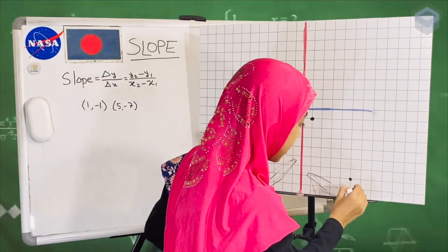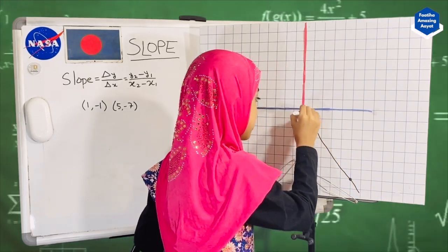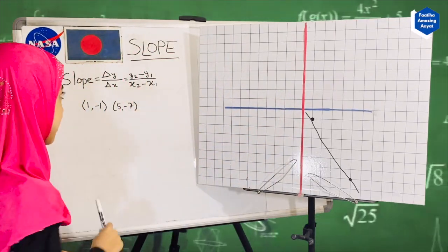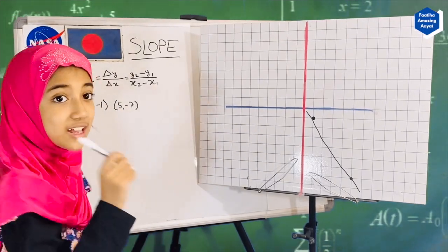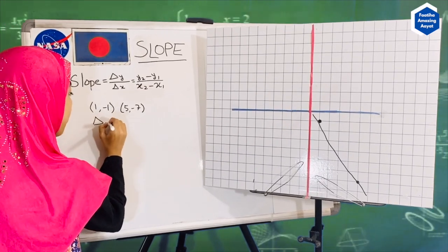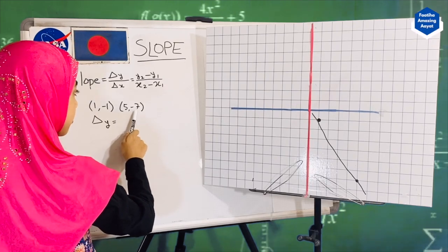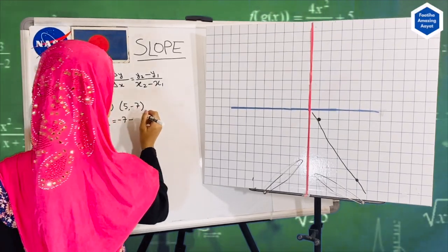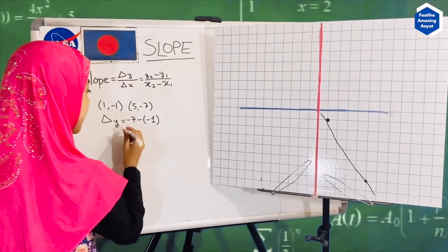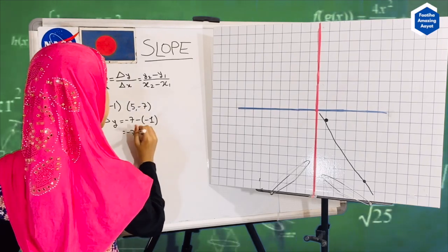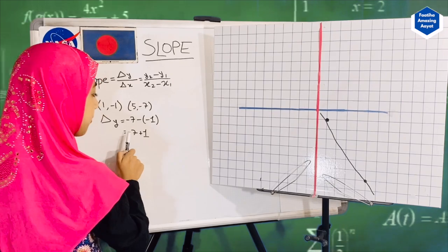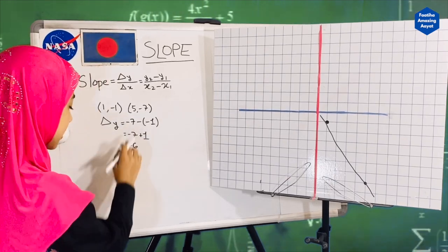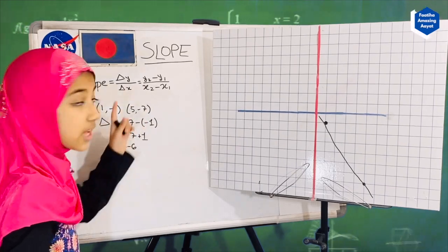Now that I have found my two points, I'll connect them so you can see the slope between them. To calculate it in math: delta y equals y2 minus y1. So delta y equals minus seven minus minus one. Minus times minus is plus, so minus seven plus one equals minus six. Delta y equals minus six.